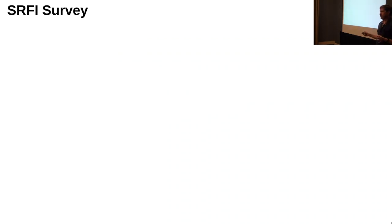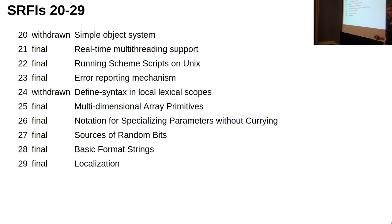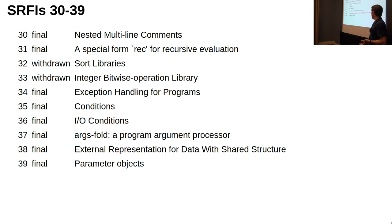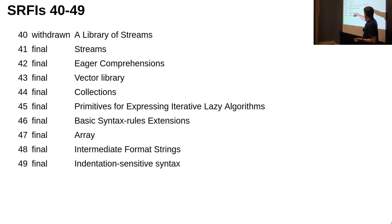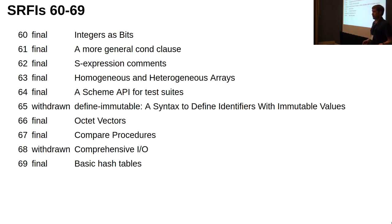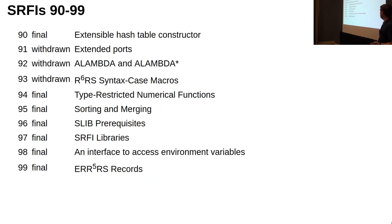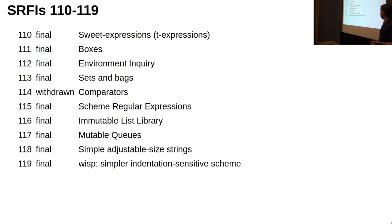I'm going to do something Jerry Sussman used to do in his 001 classes that would either infuriate students or they would love it — I'm going to do all the slides for all the SRFIs at once, real fast, just to give you a feel for 163 different designs and proposals discussed for the language. The first number is the SRFI number, each one numbered sequentially; the second is its state, which I'll explain later; and the third is a title. You can see we've been discussing an awful lot of additions to the language.